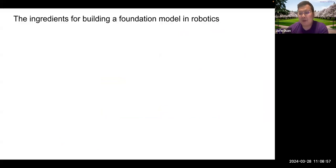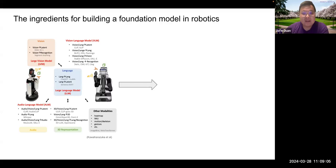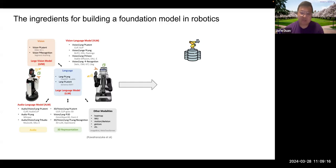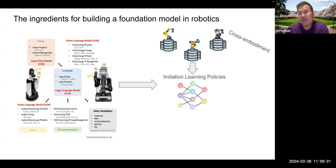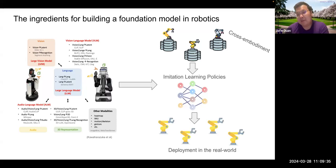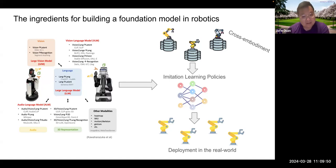The ingredients for building a foundation model in robotics — a lot of this work actually summarizes down to having a bunch of robot data. This data refers to multi-modal data that has text, vision, and also the trajectory of the robot itself. Then you train an imitation learning policy — a policy able to mimic the robot's actions by learning in a supervised manner. We're doing this with cross-embodiment and deploying into the real world. The data should be at a scale equivalent to vision and language data out there.